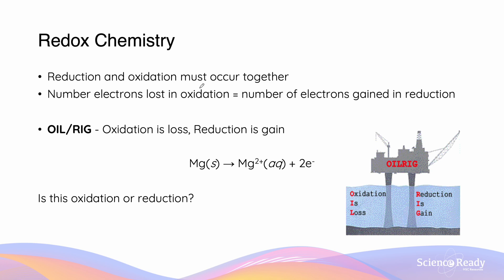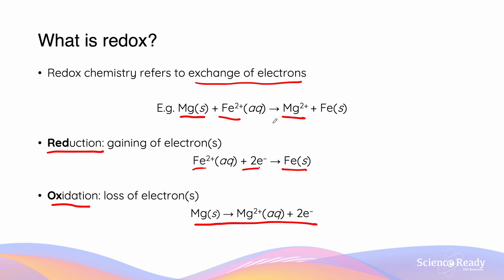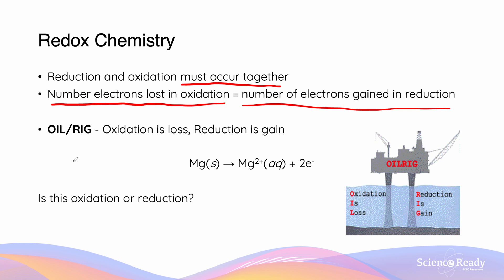Redox chemistry is named in such a way because they must occur together. It is important to notice that the number of electrons lost in oxidation must equal the number of electrons gained in reduction. So looking at our previous example, we have gained two electrons and we have lost two electrons. An easy way to remember this is with the analogy OIL RIG — it stands for oxidation is loss while reduction is gain.